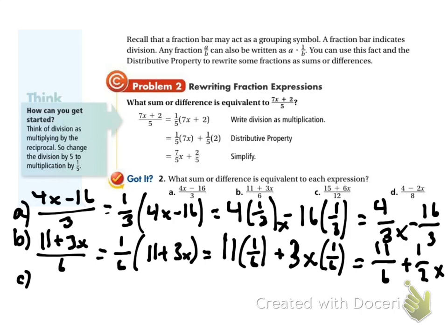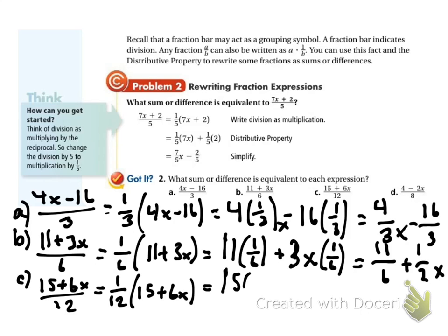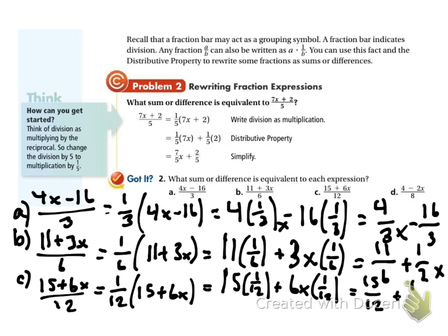Problem c is (15 plus 6x) over 12. So I'll pull the 1/12 out and get (15 plus 6x). Now I distribute my 1/12: 15 times 1/12 plus 6x times 1/12, giving me 15/12 plus 6/12 x. And 6/12 simplifies to 1/2, so I get 15/12 plus 1/2 x.